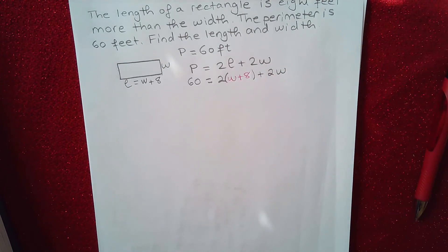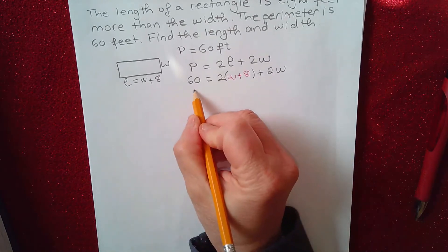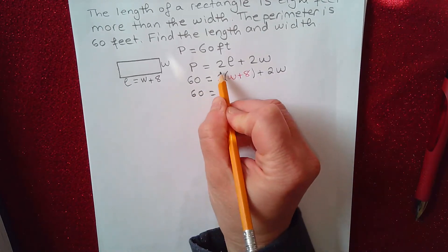Now, if you look at this equation, this is a linear equation with only one variable, W. So I can go ahead and solve it as we learned in the previous sections. So what we need to do is distribute and combine like terms on the right side. So we have 60 equals—we distribute the two—